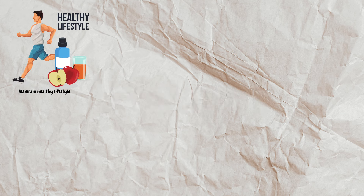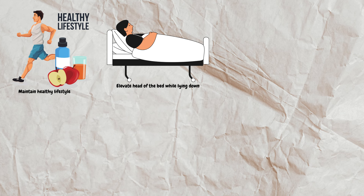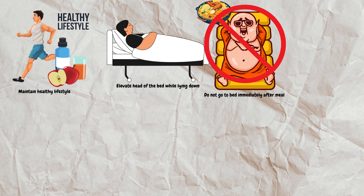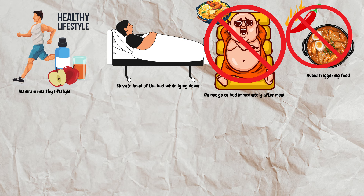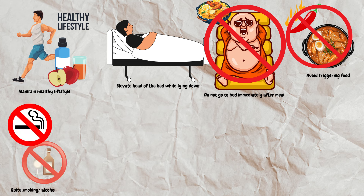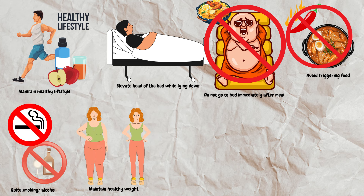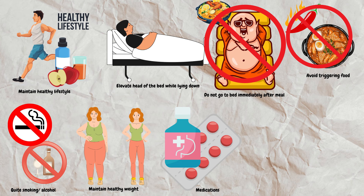There are several treatment options for GERD. Number one is lifestyle modification: elevate the head of the bed while lying down to help gravity pull contents downward; do not go to bed immediately after a meal — wait about three to four hours; avoid triggering foods; quit smoking and alcohol; and maintain a healthy weight. Medications like over-the-counter antacids, proton pump inhibitors, and H2 receptor blockers are also prescribed.